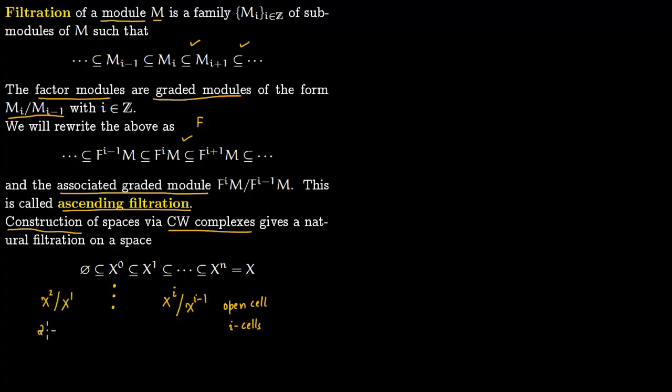This is because the boundary of two cells is attached to one cells. X^2 by itself contains everything: zero cells, one cells, and two cells. But if you modulo out X^1, you just get two cells.